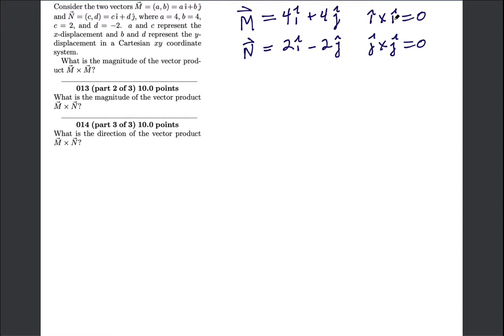So that being said, the first thing they ask is what is the magnitude of M cross M. So M cross M, well that one's going to have to be 0. We've got this vector that's 4, 4 and they're asking if I were to multiply it by itself, 4, 4.